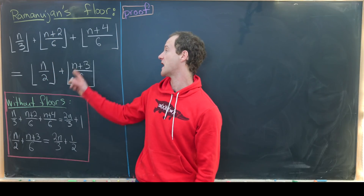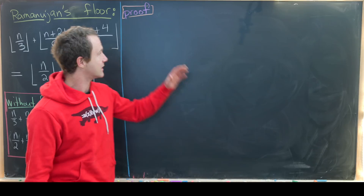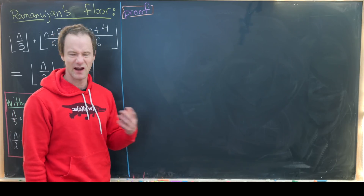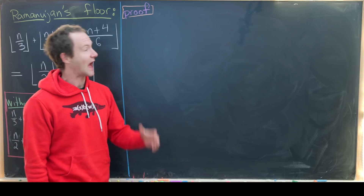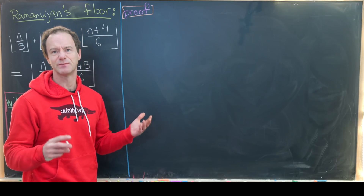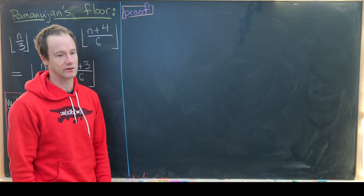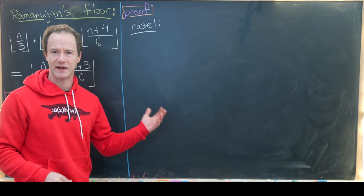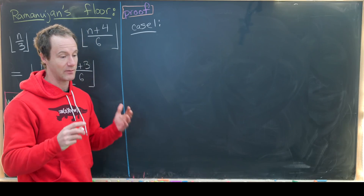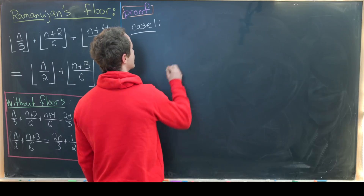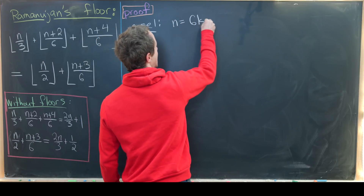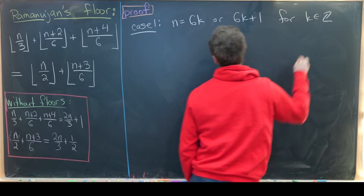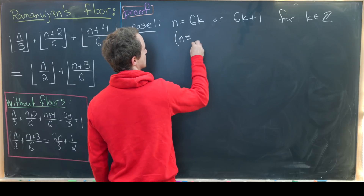Now we're ready to prove it in general. This needs to be broken up into four cases — at least that's how I did it. At first it might seem like you need six cases, but you can condense that down a little. Our first case is when n equals 6k or 6k + 1 for some integer k — in other words, n is congruent to 0 or 1 mod 6.